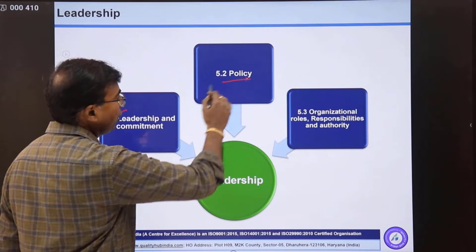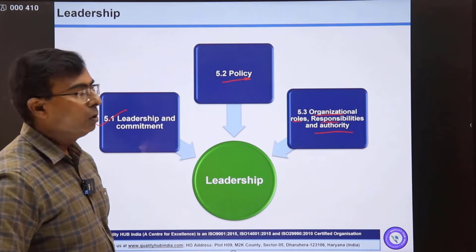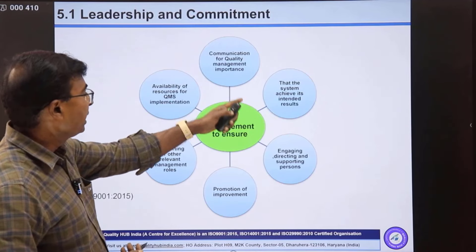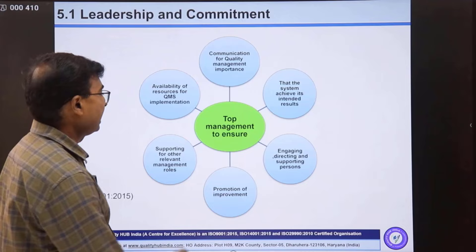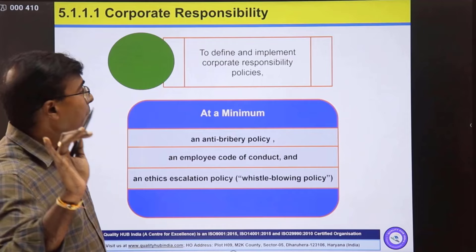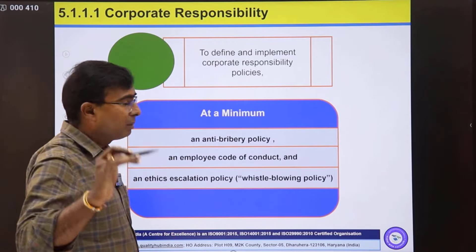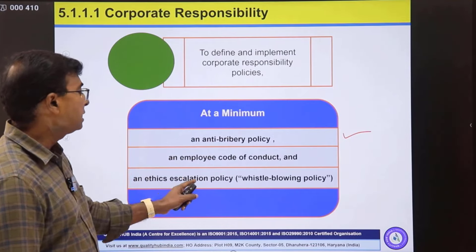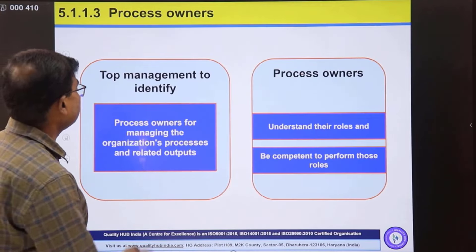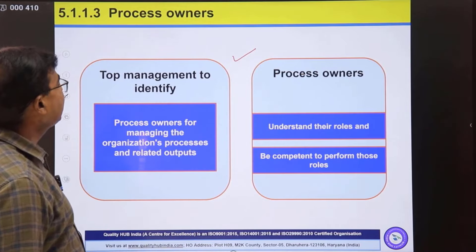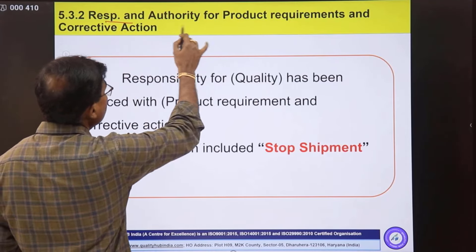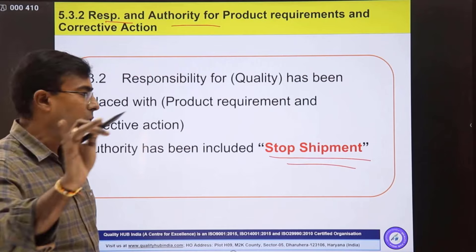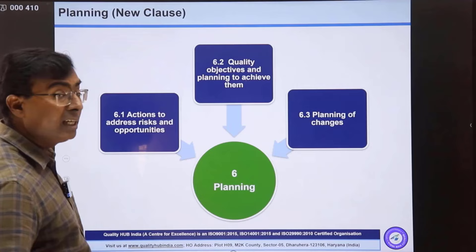Clause five is about leadership with three sub-clauses: 5.1 leadership and commitment, 5.2 policy, and 5.3 organizational roles, responsibilities, and authority. Sub-clause 5.1.1.1 talks about corporate responsibility — an exclusive IATF requirement — mandating three additional policies: anti-bribery policy, employee code of conduct, and an ethics escalation policy also called a whistleblowing policy. 5.1.1.3 requires identification of process owners. 5.3.2 defines responsibility and authority for product requirements, including someone authorized for stop shipment.